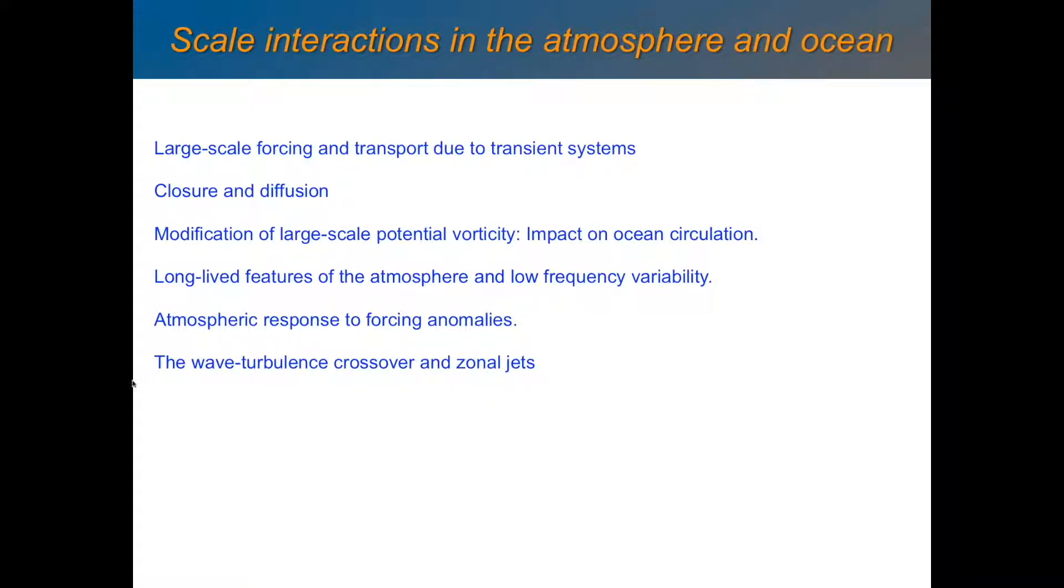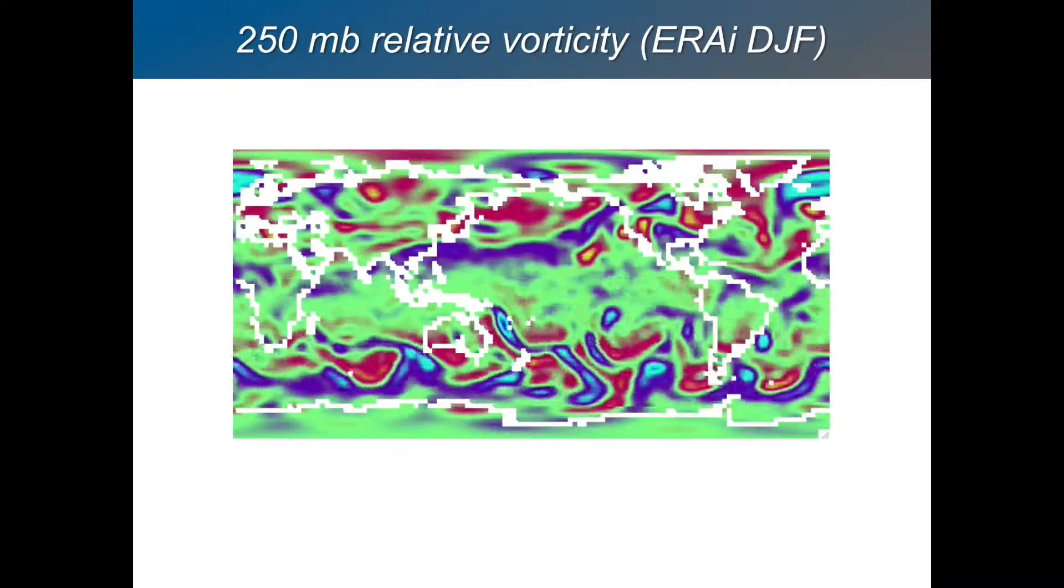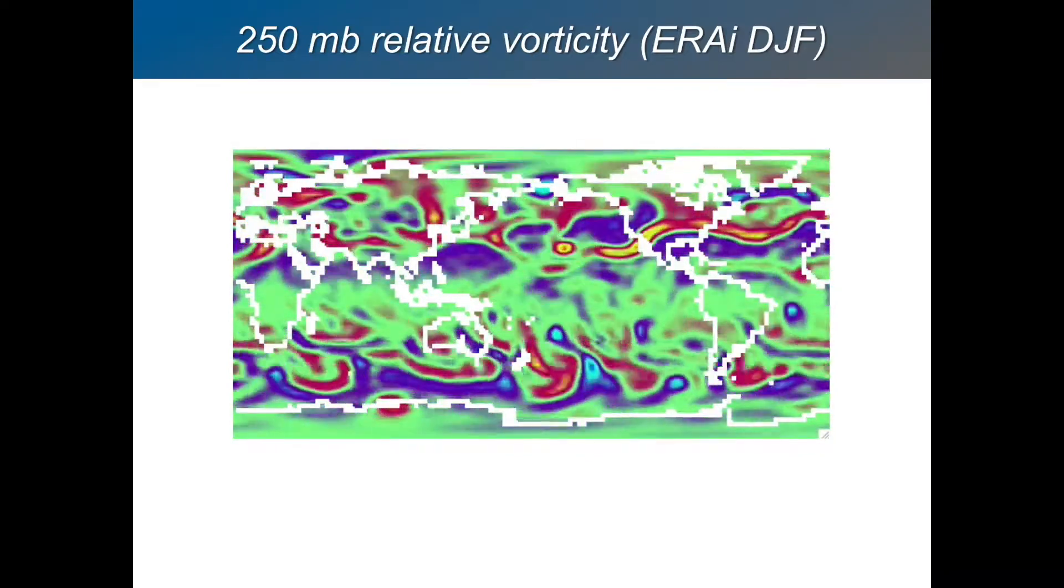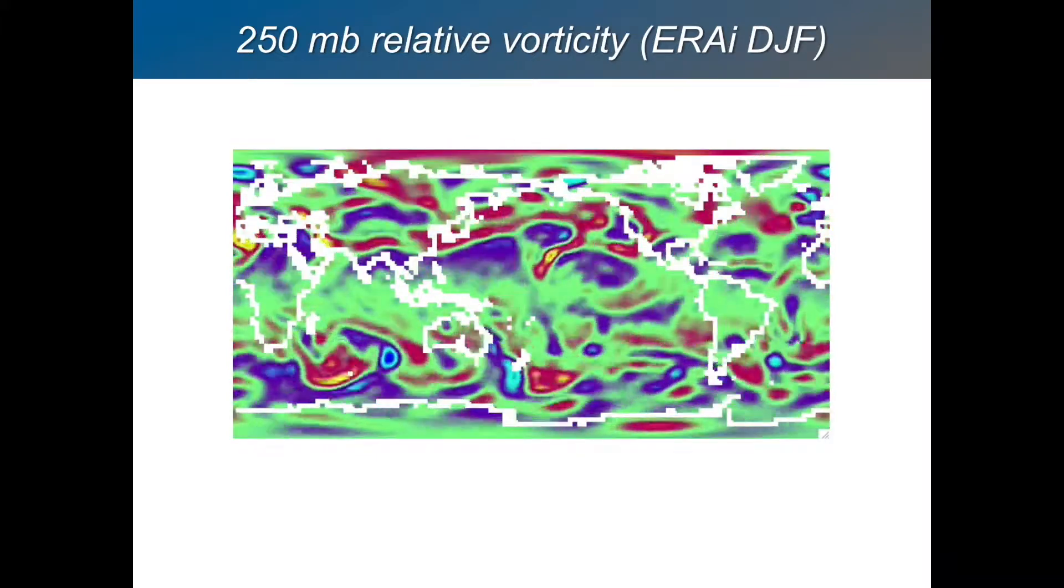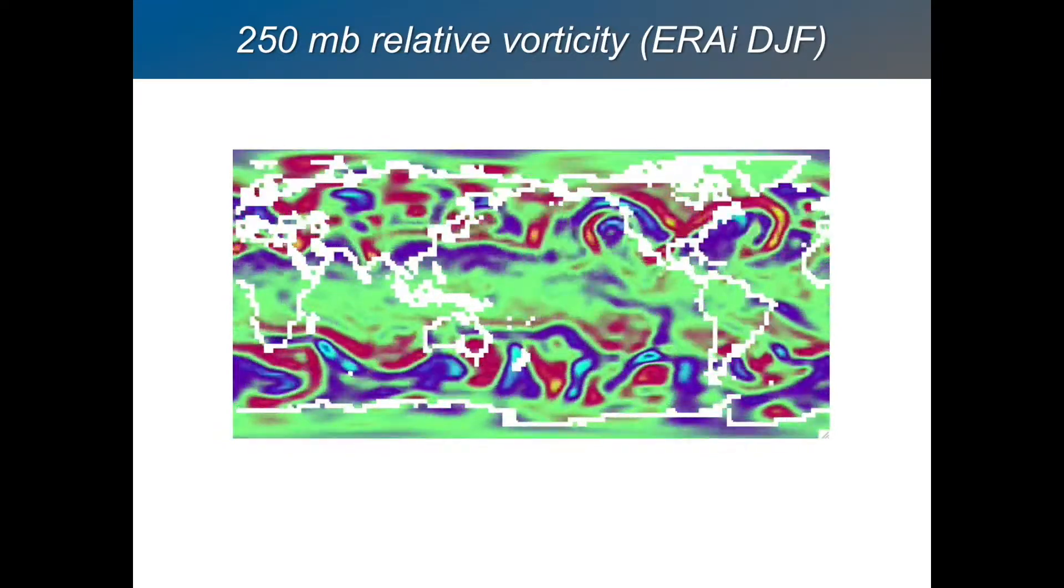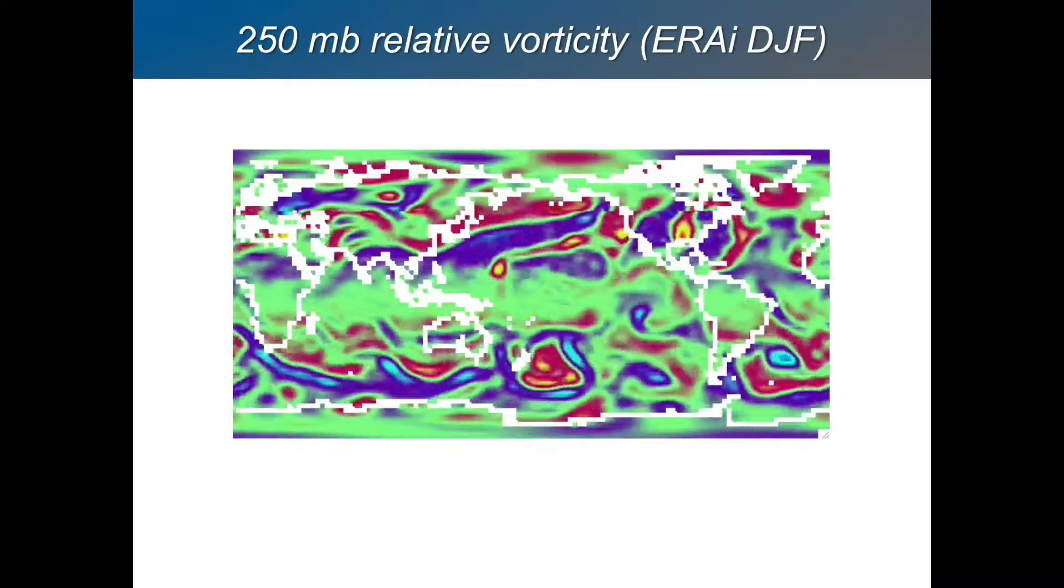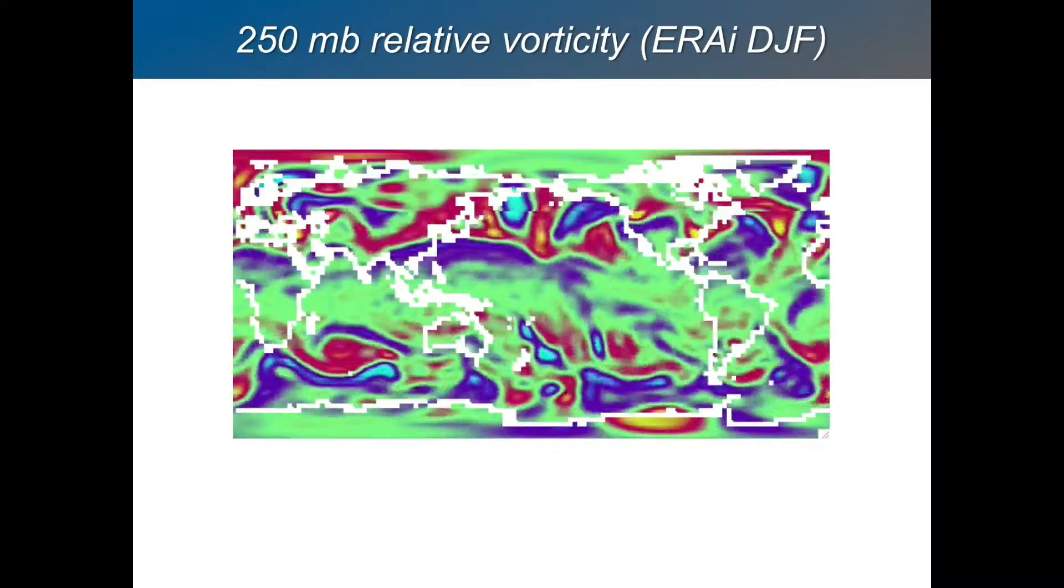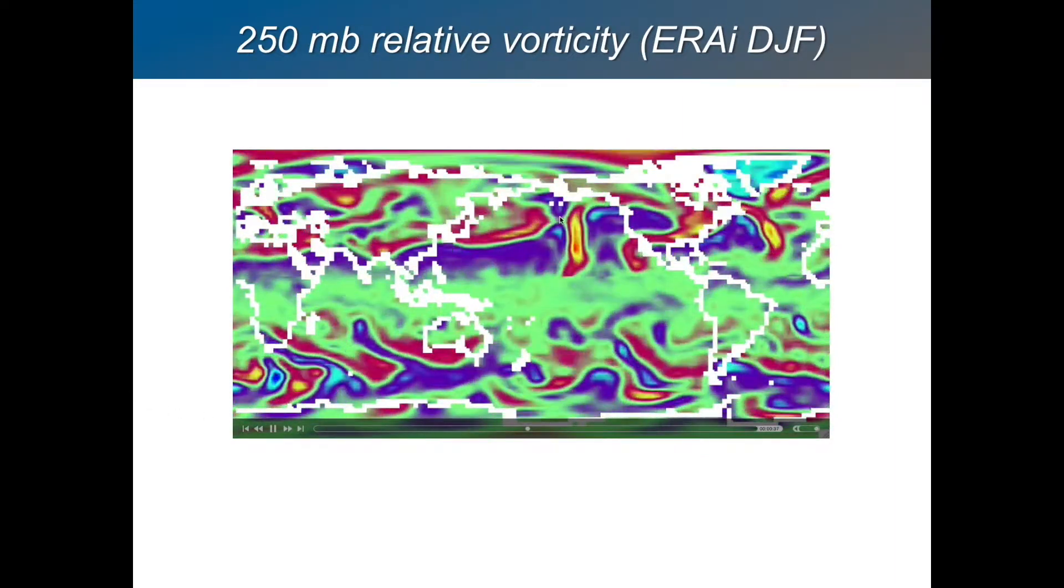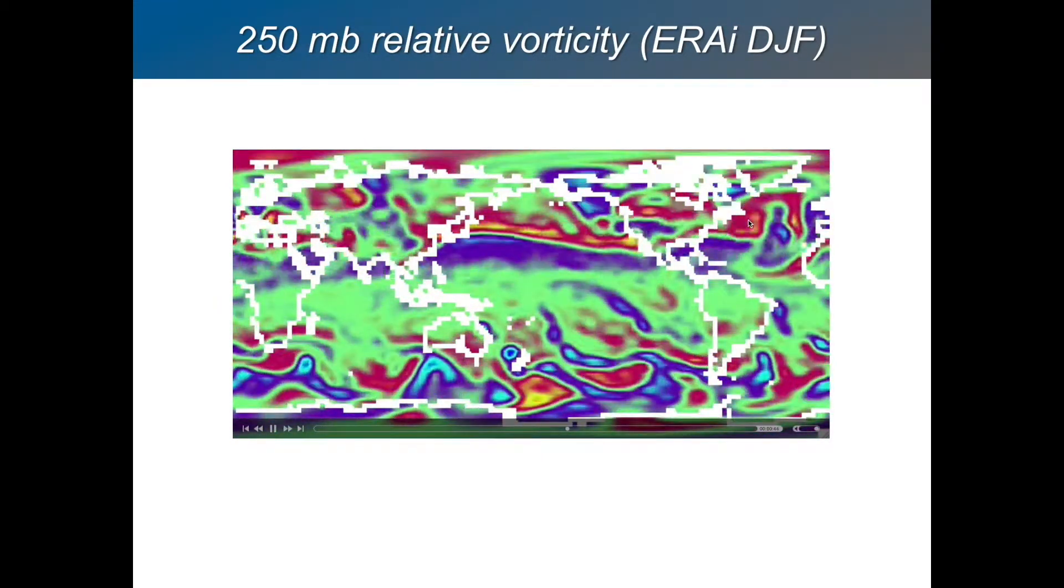So let's have a look at this video. This is the relative vorticity in the atmosphere at 250 millibars from ERA-Interim wintertime data. It looks very turbulent, doesn't it? I mean, it looks like eddies propagating basically eastwards in the extratropics. But if you look, if you kind of stare at it for long enough, you can start to pick out some features. You can sort of convince yourselves that it's more active over the oceans than over the land. These two ocean basins in the northern hemisphere, the Pacific here and the Atlantic, are the storm track regions.